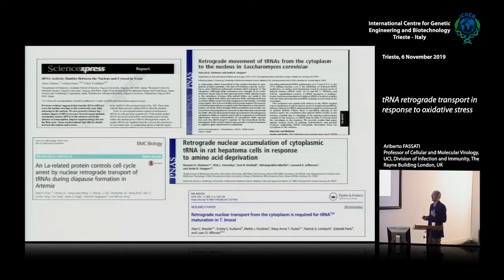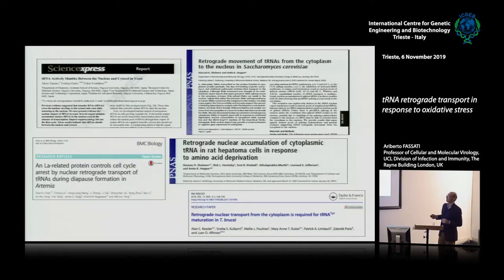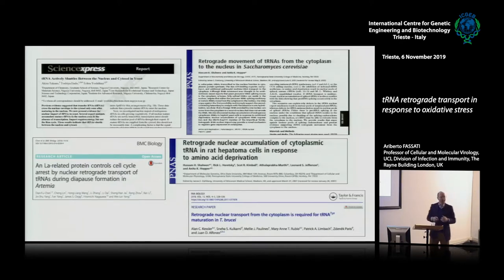Luckily, at the same time several papers were published discovering this pathway in yeast, showing it was conserved. Colleagues in Japan and Anita in the States found it in Saccharomyces, and later confirmed it in mammalian hepatoma cells. The pathway is also conserved in Artemia and found in Trypanosoma — it is probably a fundamental pathway conserved through evolution.